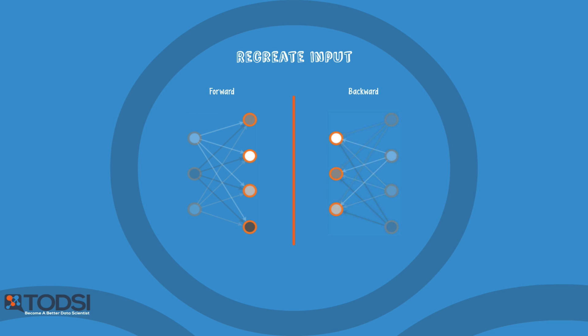At the visible layer, the reconstruction is compared against the original input to determine the quality of the result. RBMs use a measure called KL divergence for step C. Steps A through C are repeated with varying weights and biases until the input and the reconstruction are as close as possible.